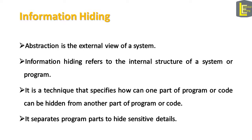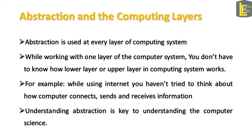Information hiding is the same concept as abstraction. While abstraction is the external view of a system, information hiding refers to the internal structure of a system or a program. It is a technique that specifies how one part of a program or code can be hidden from another part. The aim of information hiding is to separate program parts to hide sensitive details. Abstraction is used at all the layers of the computing system discussed previously.